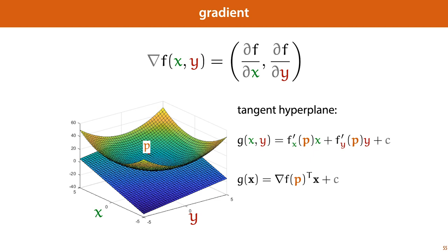The only thing you really need to understand here is that this tangent hyperplane is a local approximation of the function we're interested in. So around point p, the tangent hyperplane is a really good approximation of the function, just in that neighborhood around p. And for the tangent hyperplane, we can very easily work out the direction in which the function drops the quickest. And because it's a good approximation, that's true for both the hyperplane and the function.